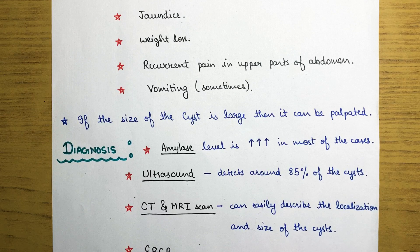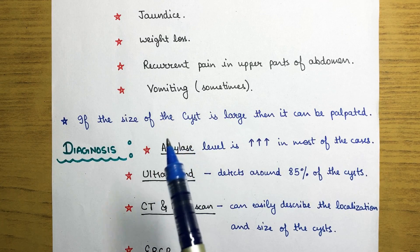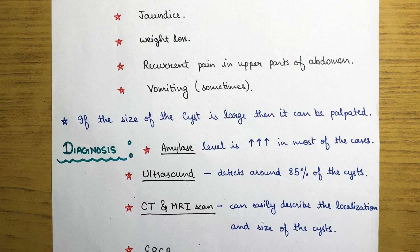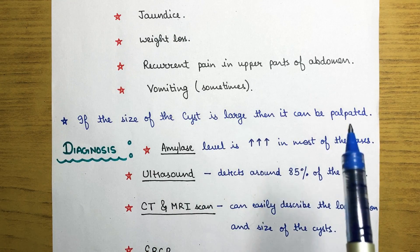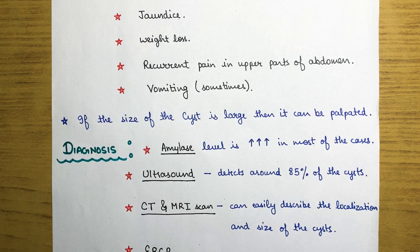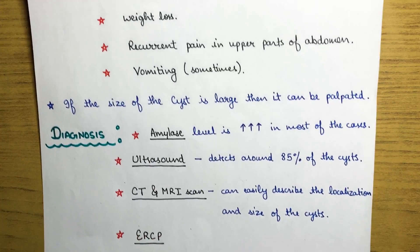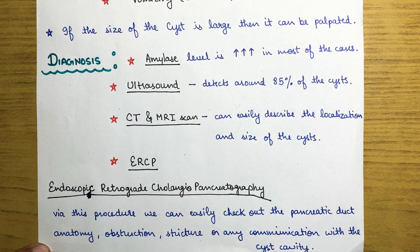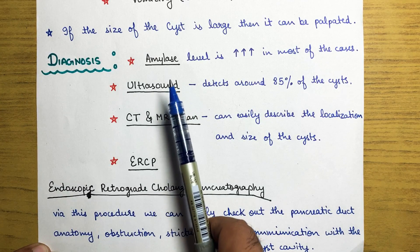If the size of the cyst is large, it can sometimes be palpated from outside, although this is quite rare because the pancreas is difficult to palpate. Regarding diagnostics, first we can do a hormone study — for example, we can check the patient's amylase level.